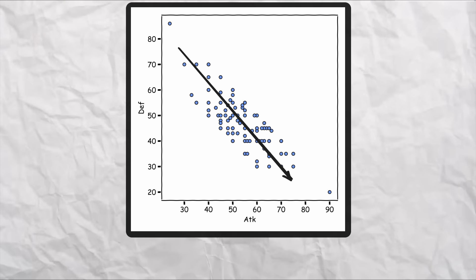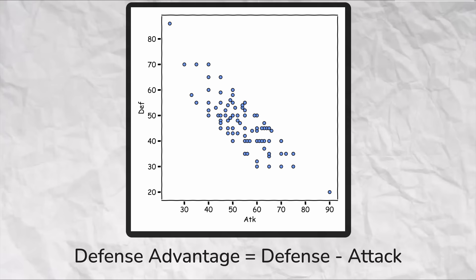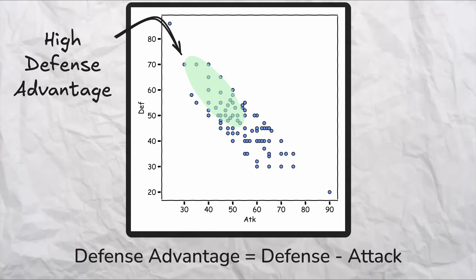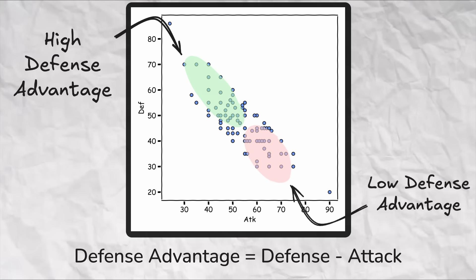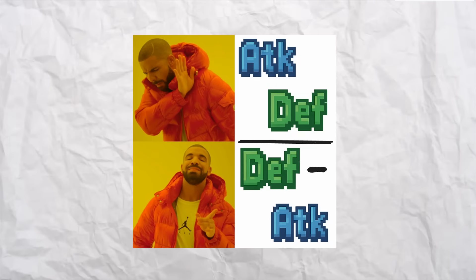So what if? What if we engineer a new stat, which is going to be defense minus attack? Something we would call defense advantage, for lack of a more creative term here. What we find is that it's exactly the weakly attacking bulky mons, which have a high positive value for this new metric. And it's exactly and only the strong attacking frail mons, which have a very negative value for this metric. Using this single metric, we've essentially captured both the attack and defense. Reducing our two stat system here into a much more streamlined one stat system.